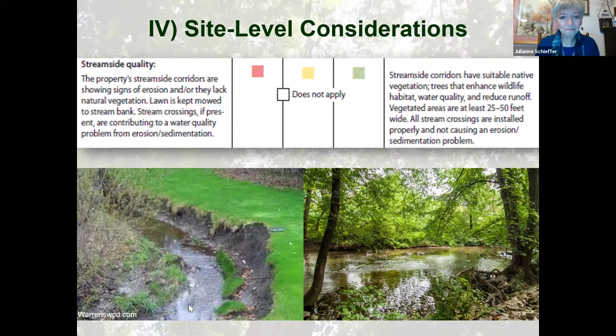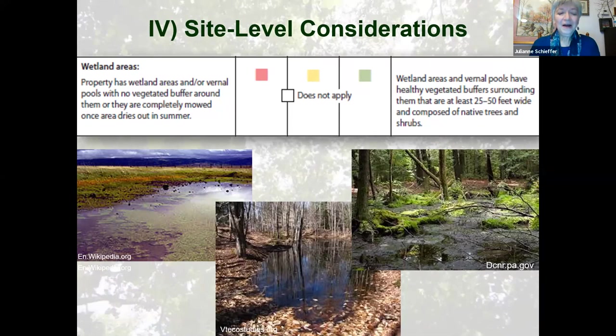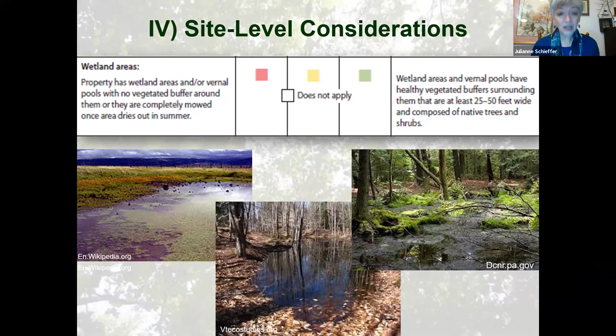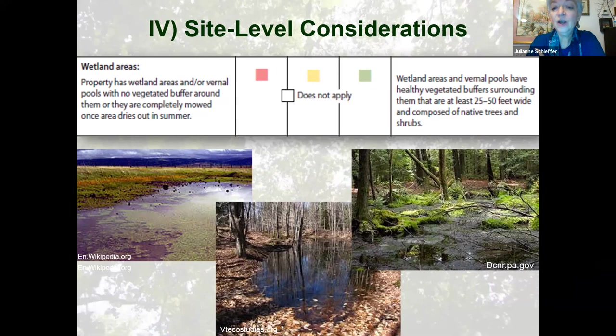Wetland areas are the next consideration. In some cases, a ditch may be considered a wetland area because it can function as a vernal pool. A vernal pool is crucial habitat where amphibians and other creatures will populate, repopulate, mate, and carry on. If you have a ditch with no vegetated area around, or just a seepage because the soil got compacted, those aren't the healthiest situations compared to a vegetated wetland forest, which you'll see on the right side.